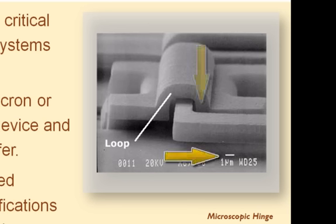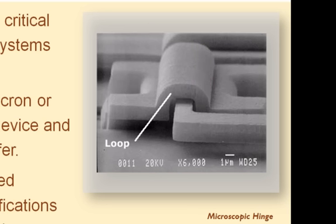Using the scale, we can estimate that the width of the space between the hinged component and its enclosure — the loop — is approximately half a micron or 500 nanometers wide.